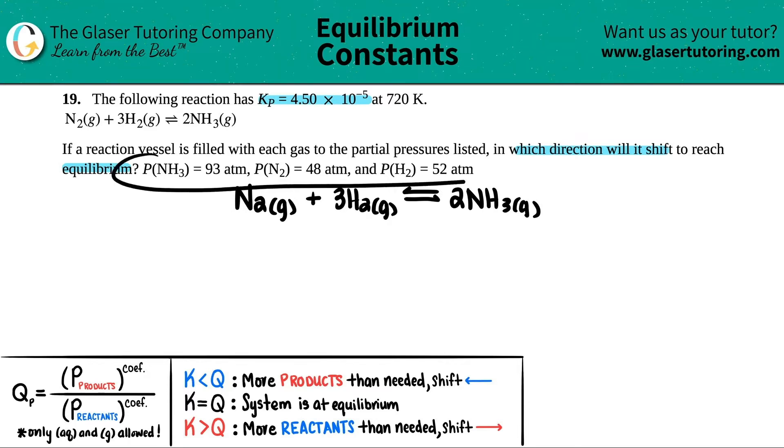The next thing I'm going to do is categorize everything and write down what they gave me. Now we're dealing with ATMs here, which means we're dealing with pressure values, and it makes sense because they gave me a Kp. The P stands for pressures. So the pressure of NH3 was 93 atm. That was a product, so I'm just going to say 93 atm, a lot of pressure. The pressure of N2 was 48 atm, and then the pressure of H2 was 52 atm.